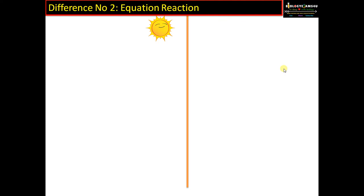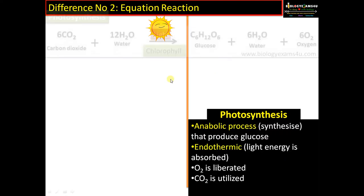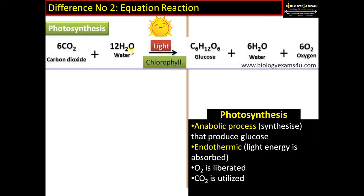Difference number two: the equation. Starting with the synthetic process — photosynthesis. Carbon dioxide combines with water in the presence of sunlight and chlorophyll, forming glucose, water, and oxygen. Oxygen is a major byproduct. In this process glucose is synthesized, therefore it is an anabolic process, and the process is endothermic as energy from sunlight is absorbed by the plant and converted to chemical energy. Oxygen is liberated and utilized by all organisms for cellular respiration, while carbon dioxide is a reactant.